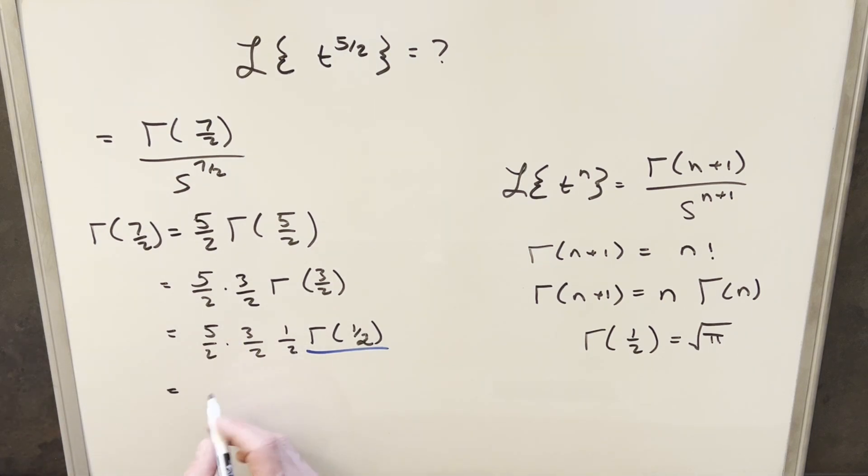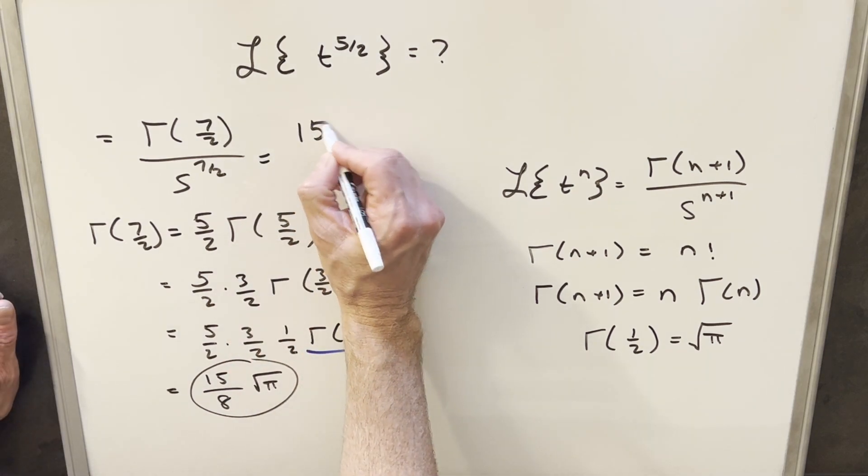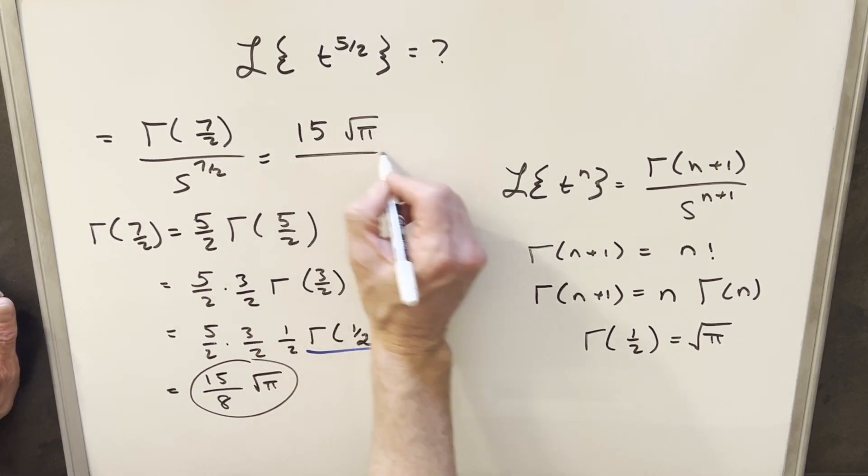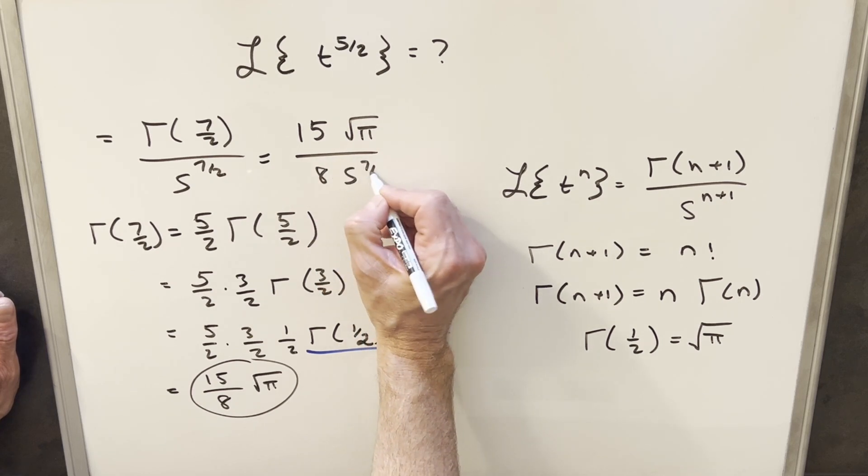So what I'll do is we'll multiply this together. 5 times 3 gives me 15. 2 cubed is going to give me 8. And this thing's going to be just square root of pi. So all we need to do is just take this and we'll plug this back in here. So for our solution to this, we're going to have just 15 square root of pi over 8s to the 7 halves.